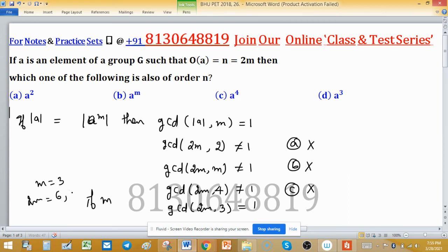Then GCD of 6 with 3 is not equal to 1. So in that case, this condition is not fulfilled here.